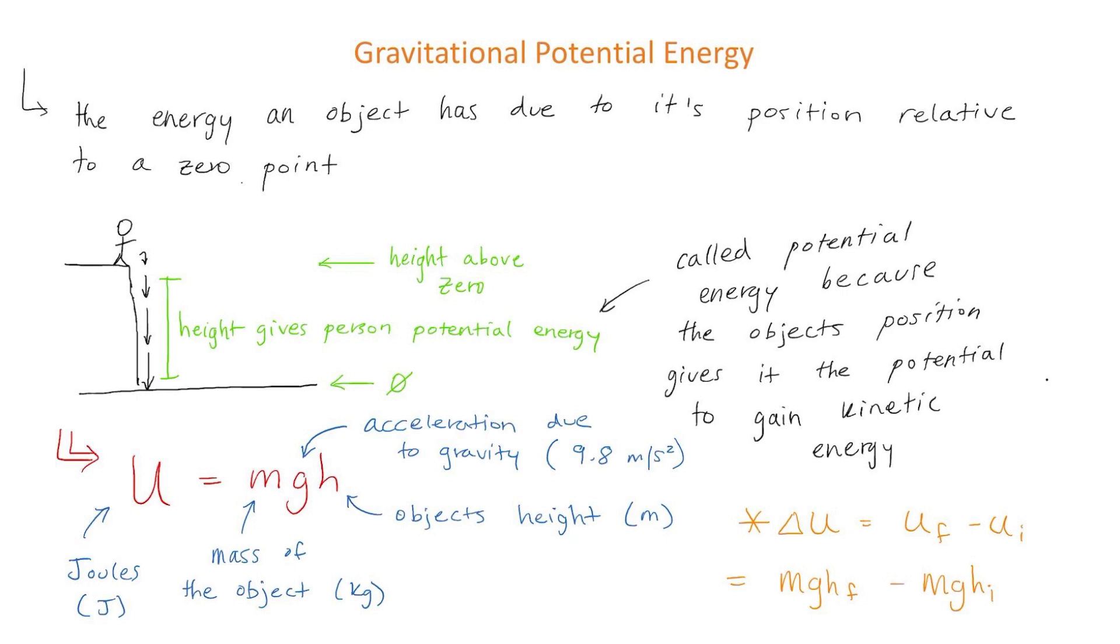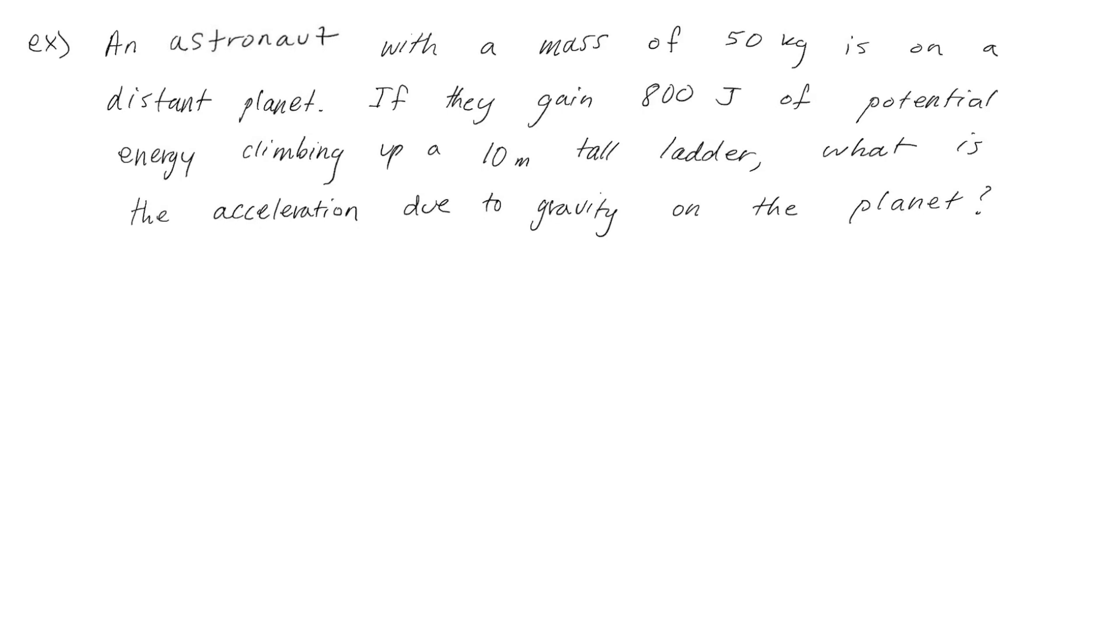Now let's do an example to practice using the gravitational potential energy equation. In this question we have an astronaut on a distant planet who has a mass of 50 kilograms and we are told that they gain 800 joules of potential energy when they climb up a 10 meter tall ladder. And we want to know what is the acceleration due to gravity on this planet?